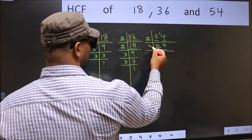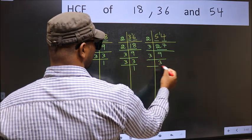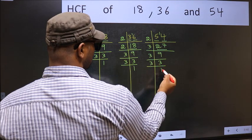Now 27 is 3 times 9. 9 is 3 times 3. Now 3 is a prime number, so 3 times 1.